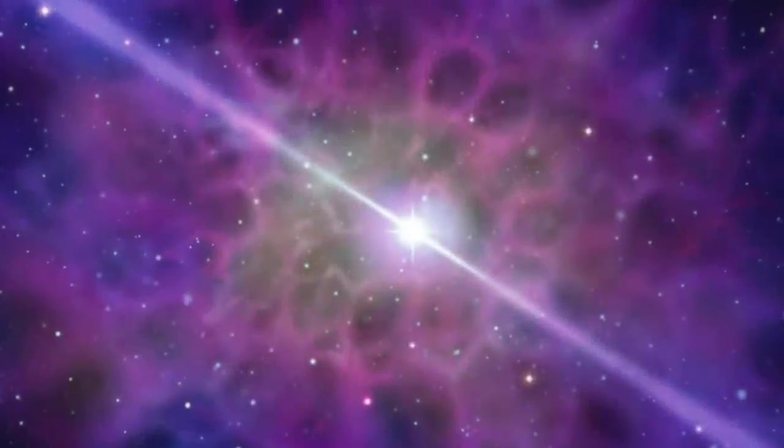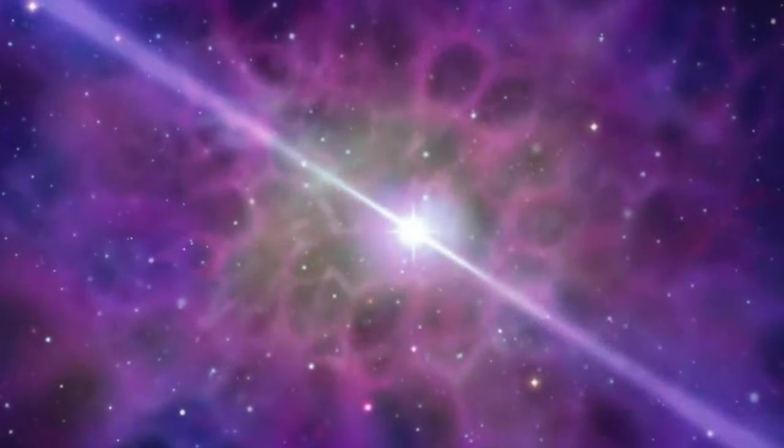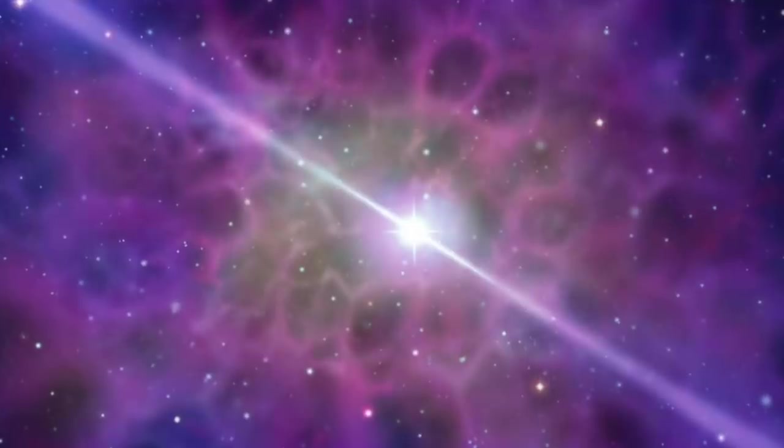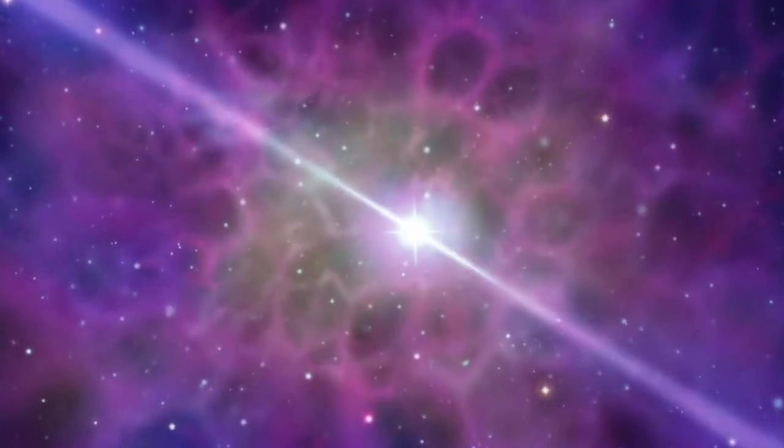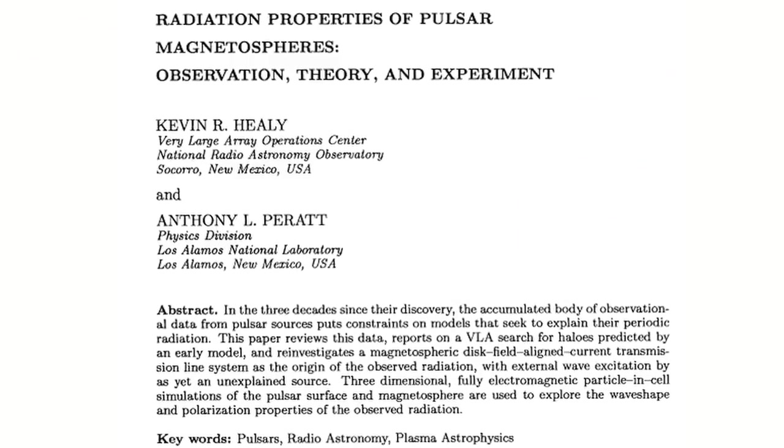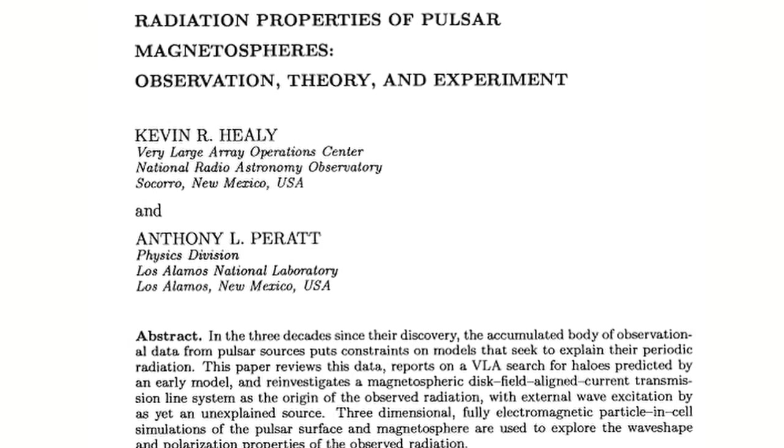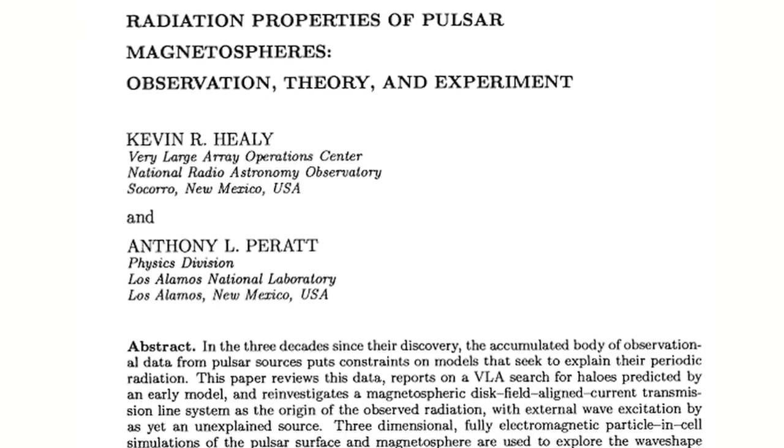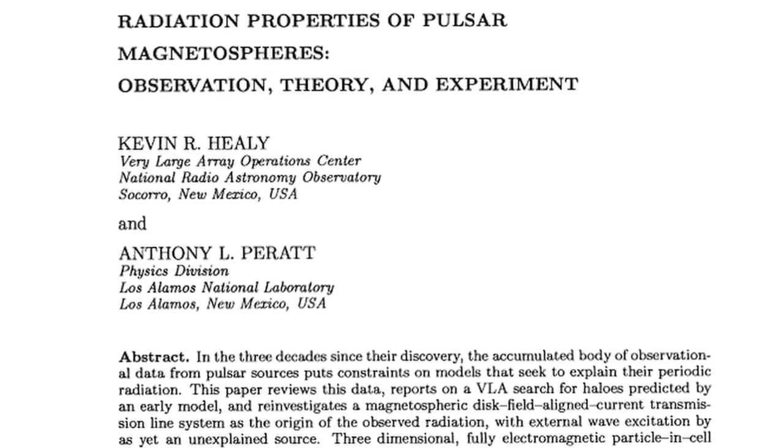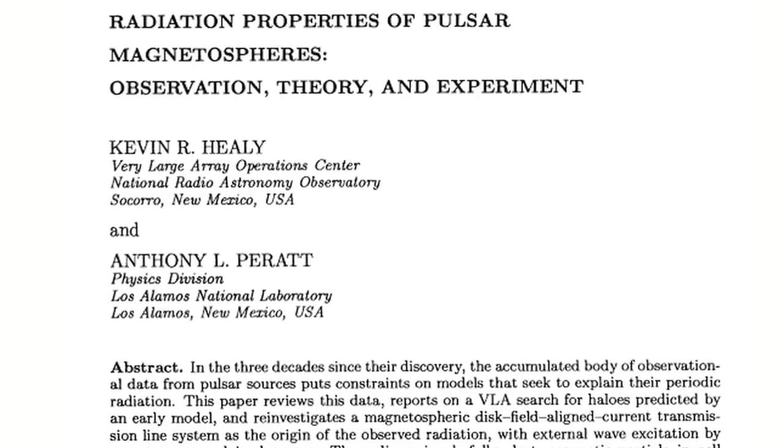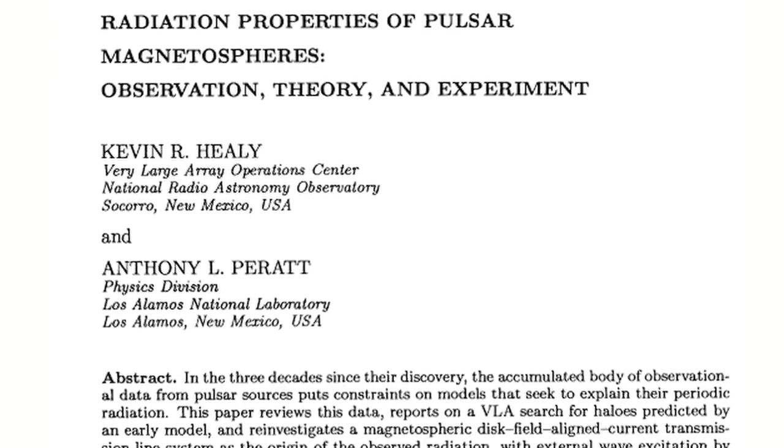We have suggested that many of the so-called anomalies surrounding pulsars can be resolved if the source is a lightning-like electrical discharge. In fact, this idea was proposed in 1995 in the scientific paper, Radiation Properties of Pulsar Magnetospheres, Observation, Theory and Experiment by co-authors Dr. Anthony Peratt and Kevin Healy.